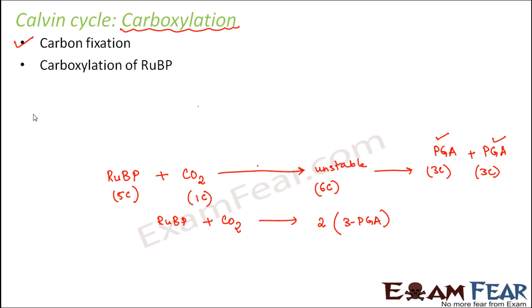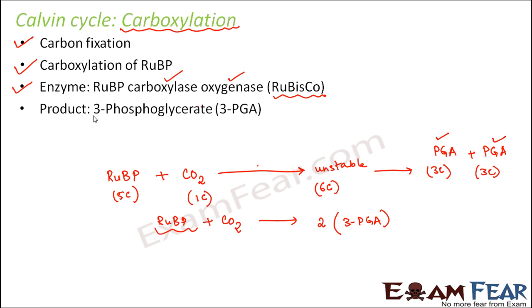So carbon fixation, here carboxylation of ribulose biphosphate takes place, that is carbon dioxide is added to ribulose biphosphate. The enzyme which plays a role here is RUBP carboxylase oxygenase, that is Rubisco. Why is it called carboxylase and oxygenase? Because it helps in carboxylation as well as it causes oxygenation. The product which is formed is 3-phosphoglycerate. So it is a 3-carbon atom. So that is the first step, carboxylation.